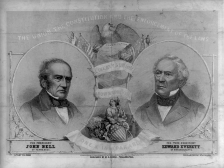Crittenden, Sam Houston, William Alexander Graham, and William Cabell Rives also received support for the party's presidential nomination at the convention. In the 1860 presidential election, Bell took 12.6 percent of the popular vote and won three slave states. Most of Bell's support came from former Southern Whigs or Know Nothings.